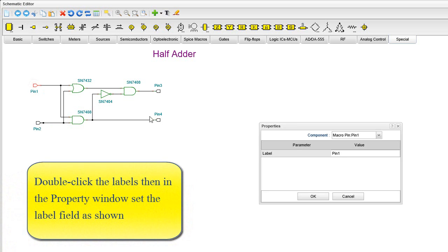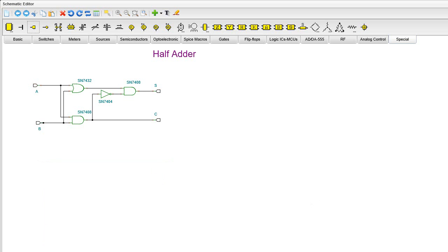Double-click the labels. Then, in the property window, set the label field as shown. Reposition some labels.